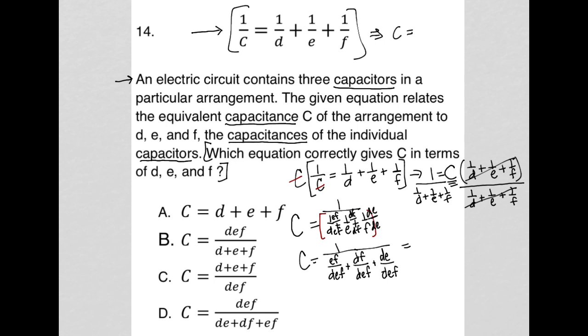So again, because my denominators are the same down there now, I can write that as EF plus DF plus DE all over DEF.